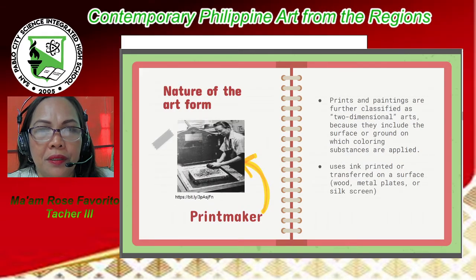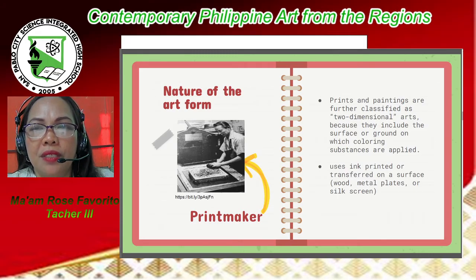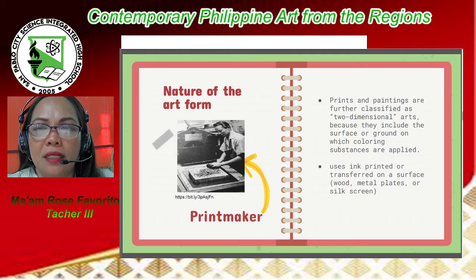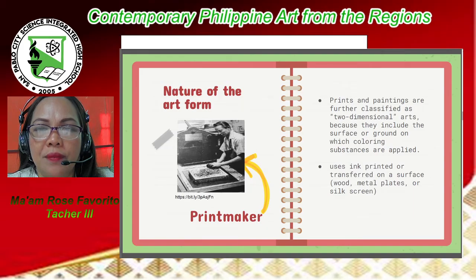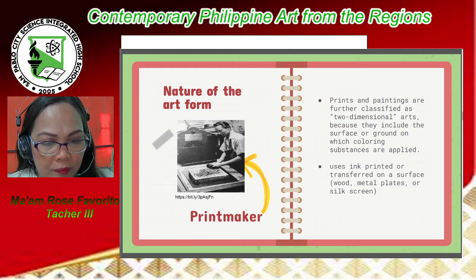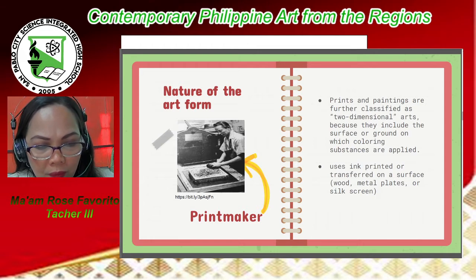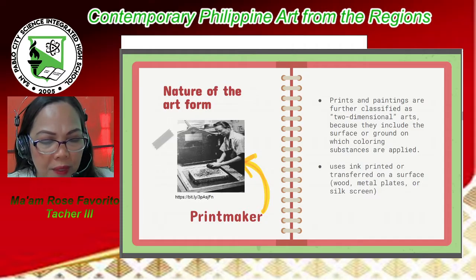Number four is printmaking. Prints and paintings are further classified as two-dimensional arts because they include the surface or ground on which coloring substances are applied. Printmakers use ink printed or transferred on a surface — wood, metal plates, or silk screen. While paintings are unique and one-of-a-kind, prints can be reproduced in several pre-determined editions.